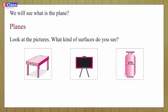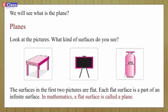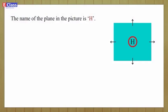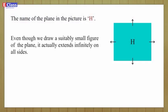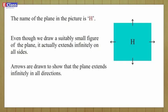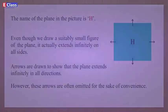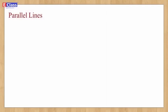Students, let's learn about planes. Look at the pictures — what kind of surfaces do you see? The surfaces in the first two pictures are flat. Each flat surface is a part of an infinite surface. In mathematics, a flat surface is called a plane. The plane in the picture is named H. Even though we draw a small figure of the plane, it actually extends infinitely on all sides. Arrows are drawn to show that the plane extends infinitely in all directions.